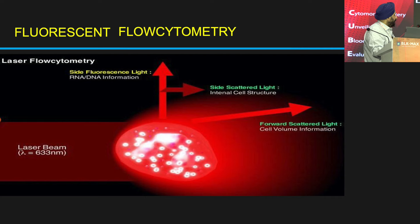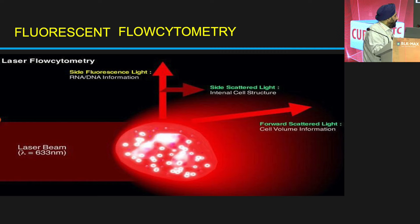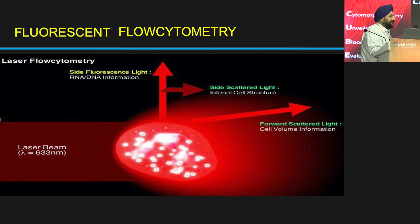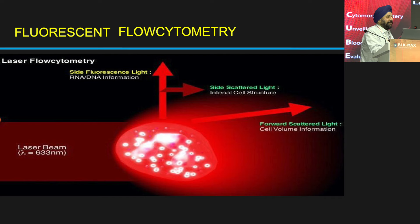We all know that the basic principle of all hematology analyzers is fluorescent flow cytometry, where the forward scatter of the light is depictive of the cell volume or cell size — the more the forward scatter, the bigger the cell. Side scatter shows the internal cell structure or granularity — the higher the side scatter, the more granular the cell. The side fluorescence light tells about the RNA and DNA content of the cell; the more the fluorescence, the more immature the cell.